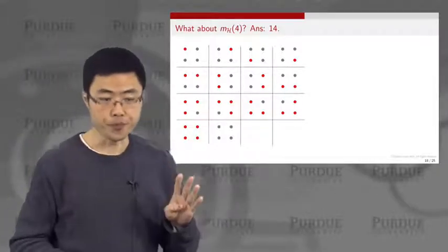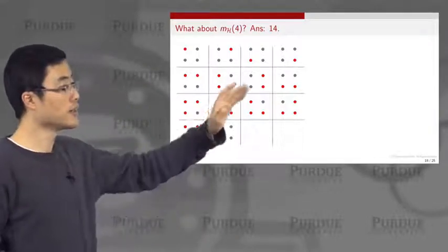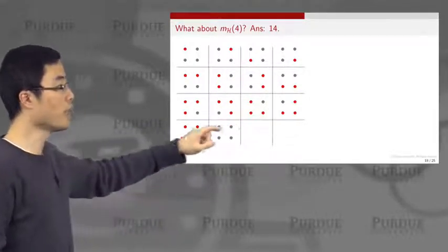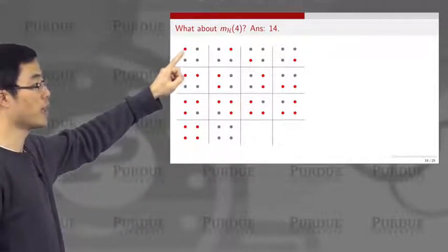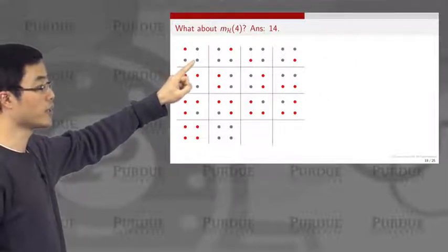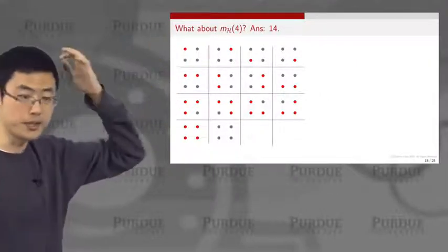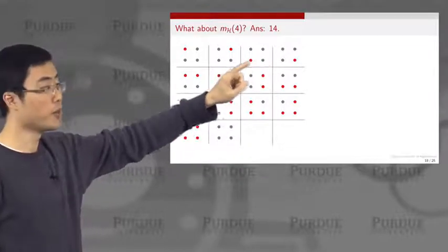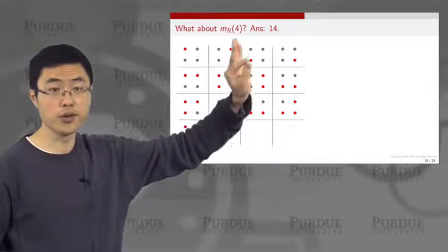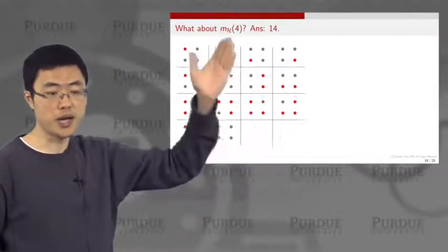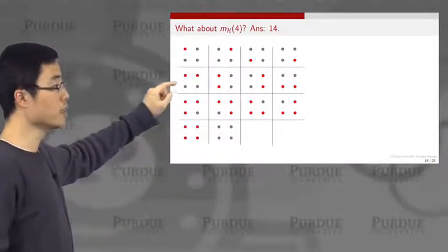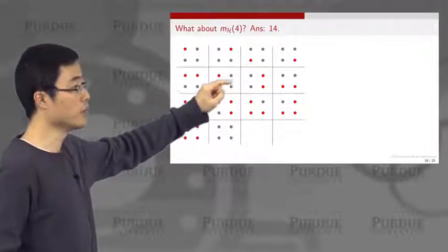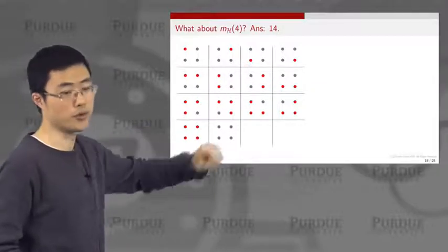So in this case we ask: what is mH of 4? You can see that these are all the possible cases. For example, I can draw a line that classifies the red dot and the gray dots. In the second case I can also draw a line. The third and fourth ones I can also draw a line. By drawing one line — since I'm using a linear model — I can make the lower half gray and the upper half red, or vice versa. The second row is also possible by drawing a vertical or horizontal line.